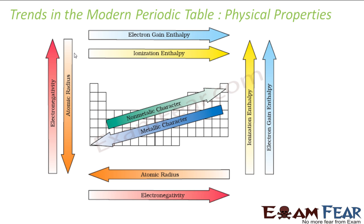So let's recap the trends we have learned. Electron gain enthalpy increases as you go from left to right across a period. Why? Because the size of the atom decreases, so the power of the nucleus to attract an electron increases.